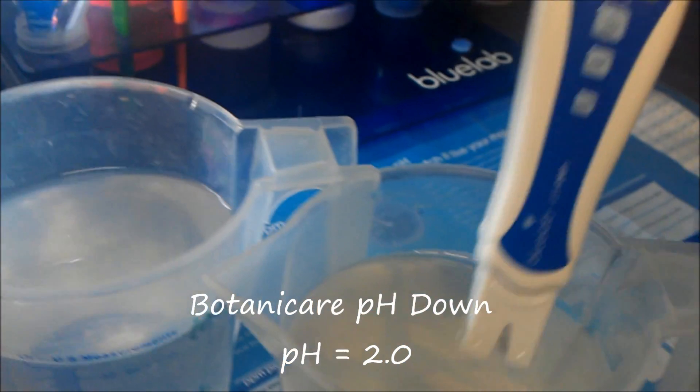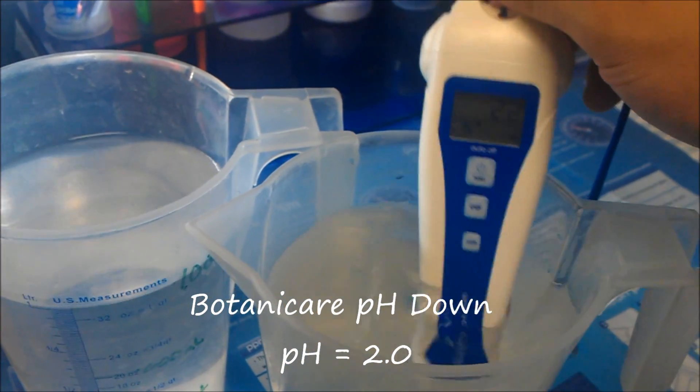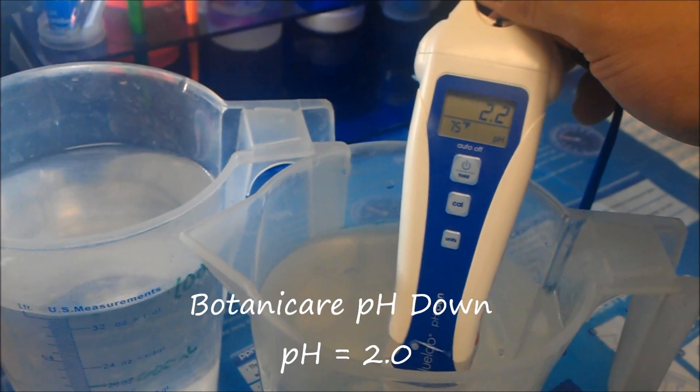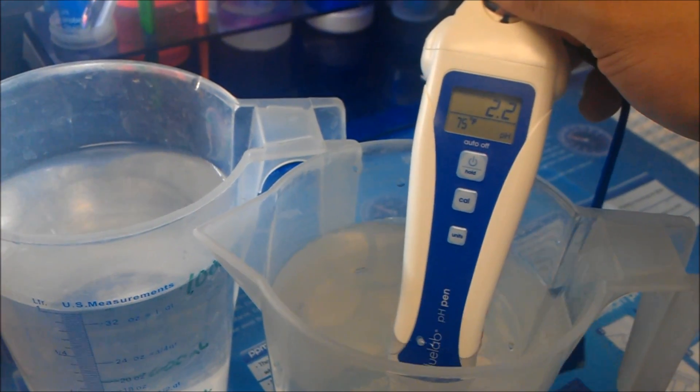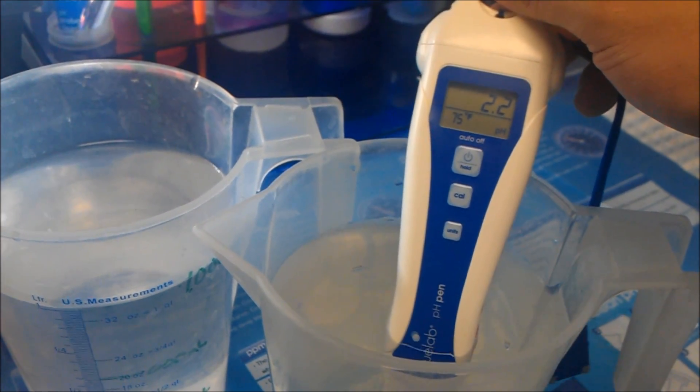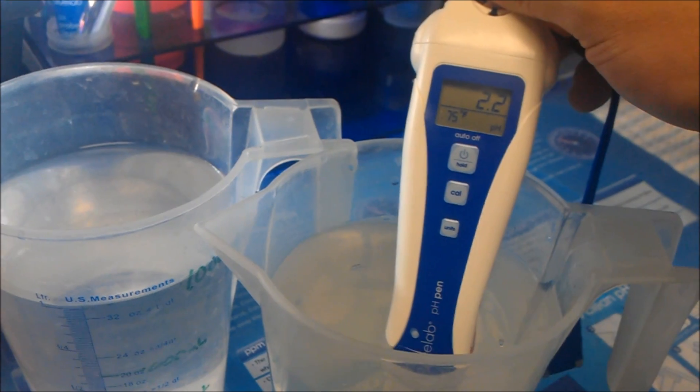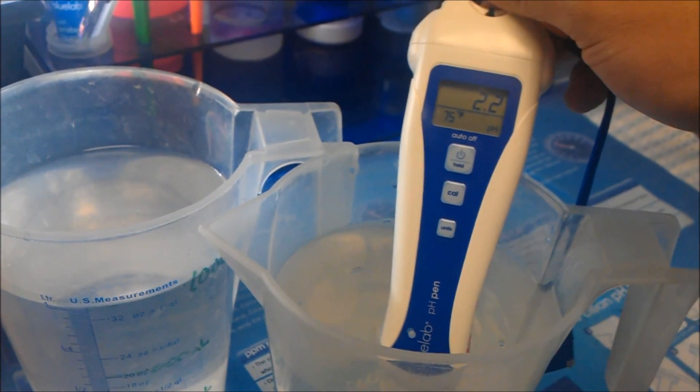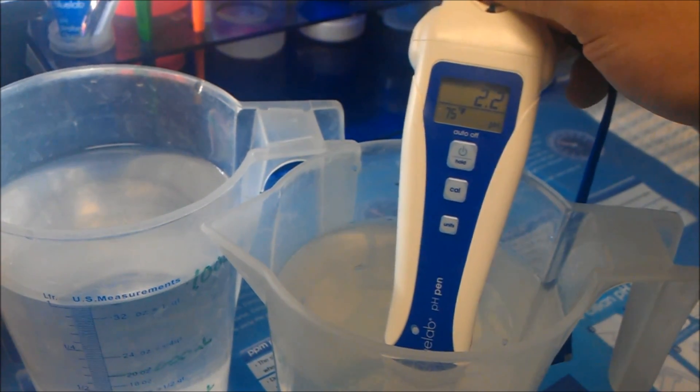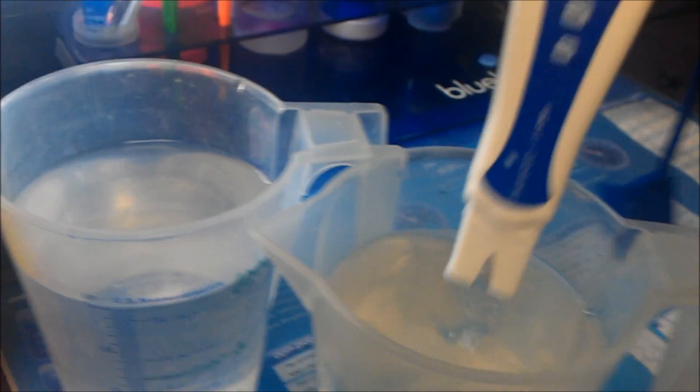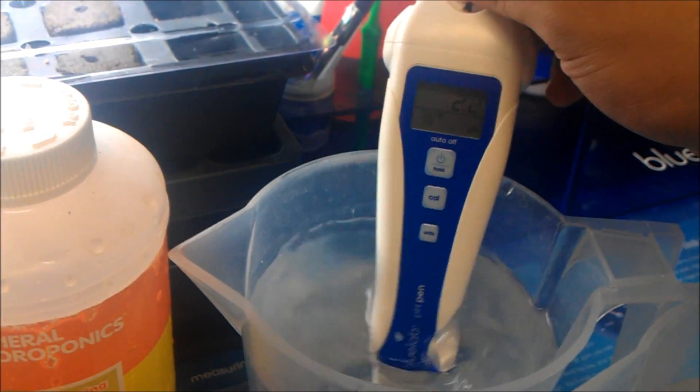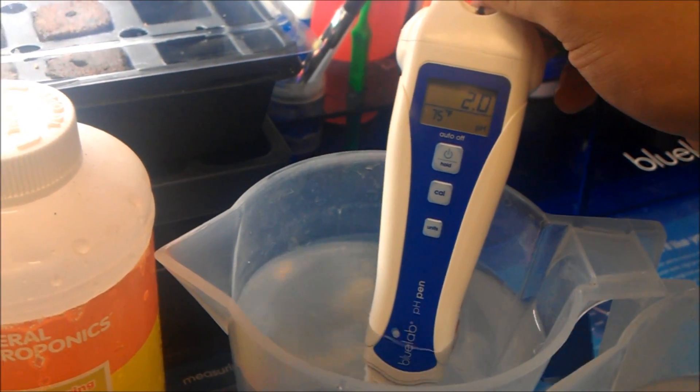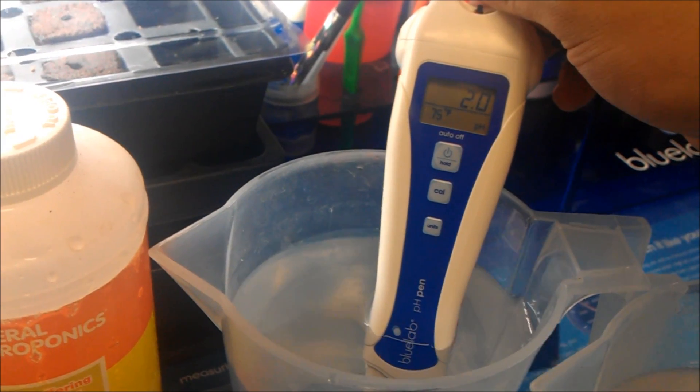So what I'm going to do is add another 3ml to each, wait another 5 minutes, and take another reading. But so far, it actually looks like Botanicare is doing a little bit better. Again, 2.2 for General Hydroponics and 2.0 for the Botanicare.